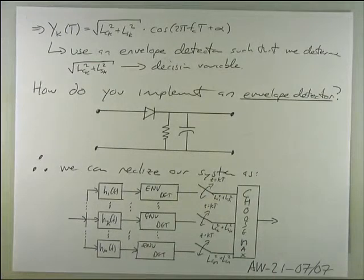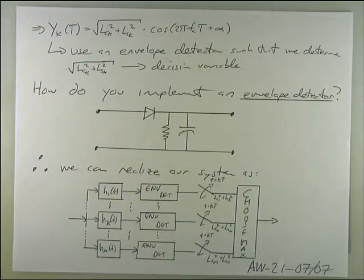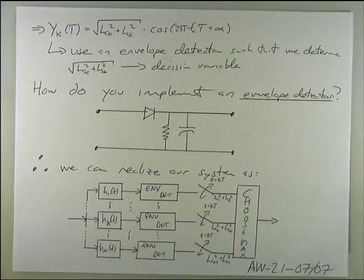We don't care about the phase. Someone during office hours asked about envelope detection — and what does envelope detection mean? All I care about is the envelope that rides over the cosine that's modulating it, not the bandpass representation itself. That is actually the square root of lck² + lsk².